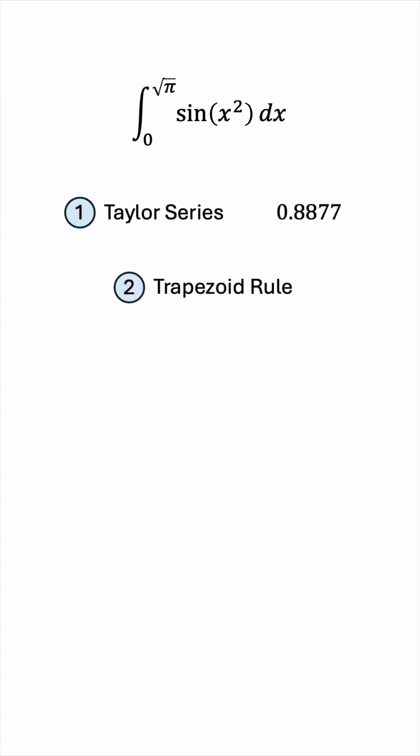Method two is the trapezoid rule. If we were to sketch a graph of sin x squared, it will look something like this. My sketch is not the best, but this gives you the idea. So the integral from 0 to radical pi is the area under the graph.